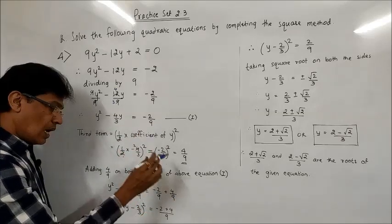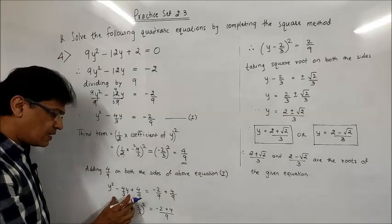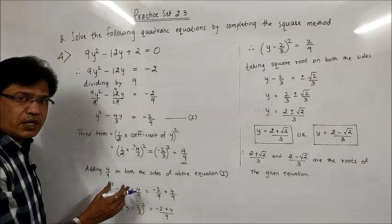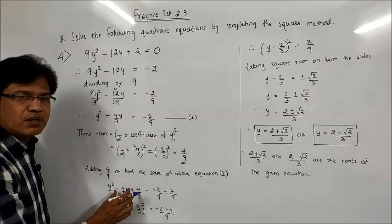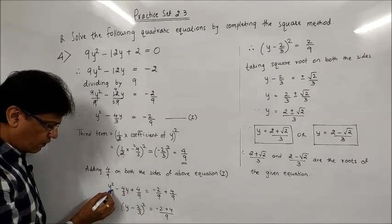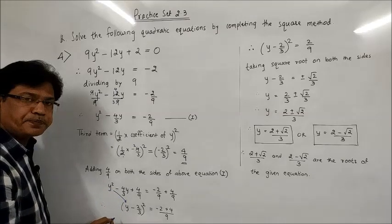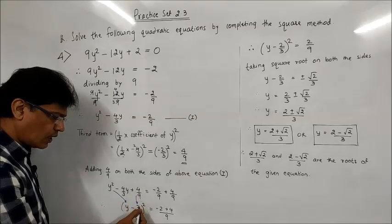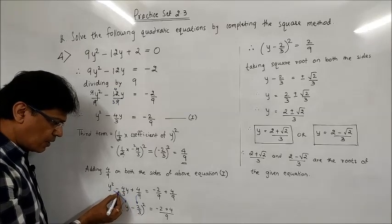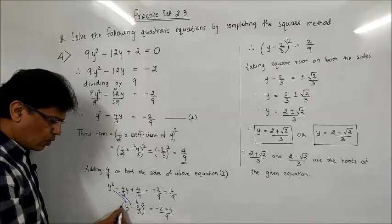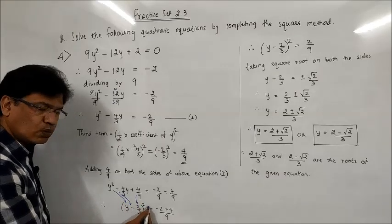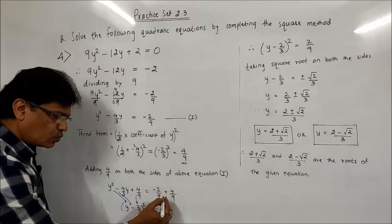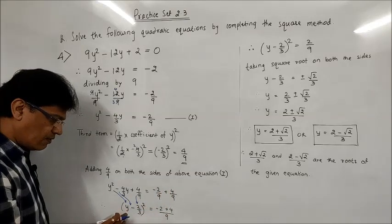Adding 4/9 on both sides: y² - (4/3)y + 4/9 = -2/9 + 4/9. The left-hand side becomes a complete square. To find which binomial this is, I take the square root of the first term: √(y²) = y, and the square root of the third term: √(4/9) = 2/3, with the sign of the middle term being minus. So the left-hand side is (y - 2/3)². On the right-hand side, -2 + 4 = 2, giving 2/9.